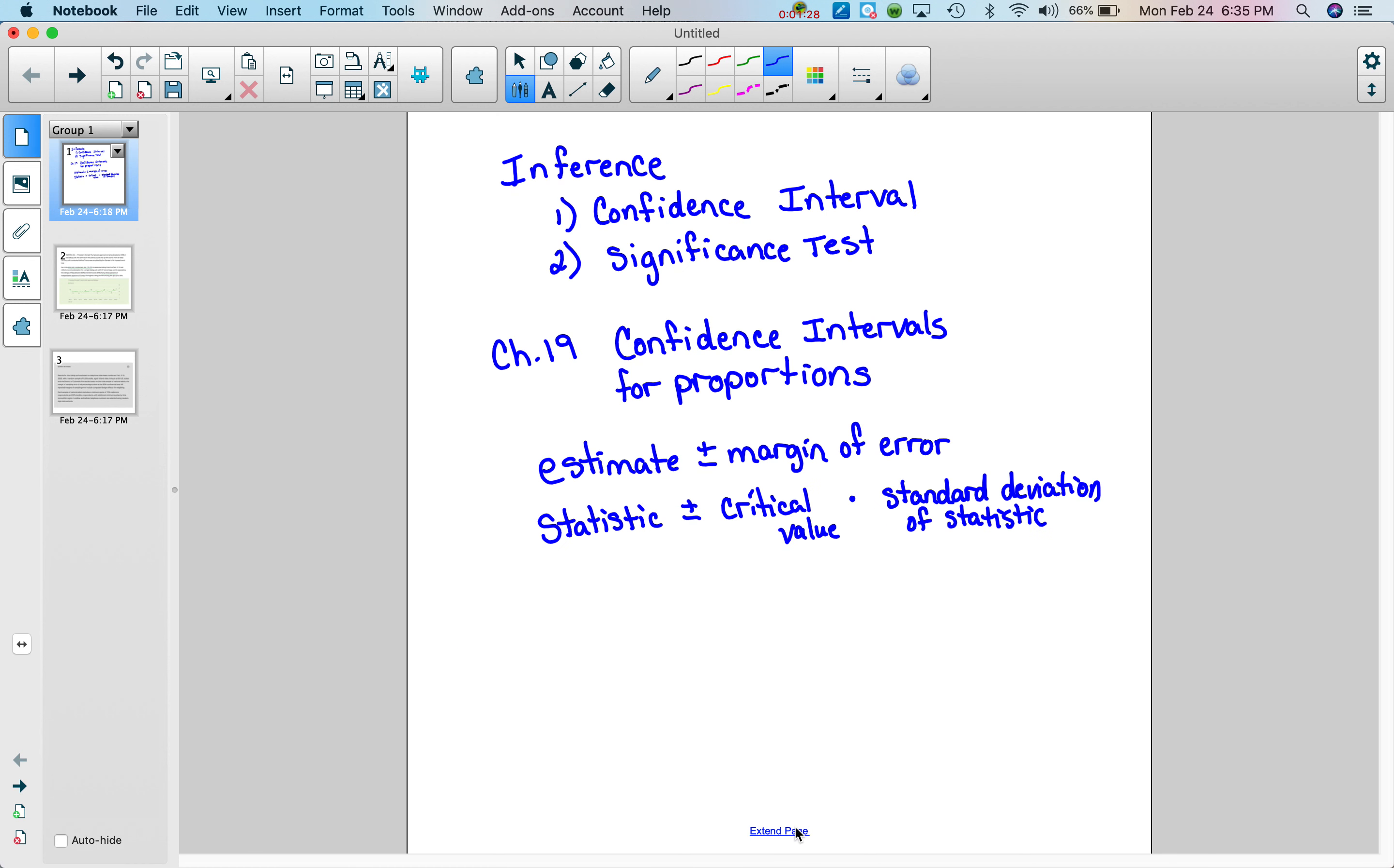So what that looks like in symbols for proportions: our statistic is going to be p hat plus or minus. The critical value we use the symbol z star, where z stands for our standard normal values, so we have z scores.